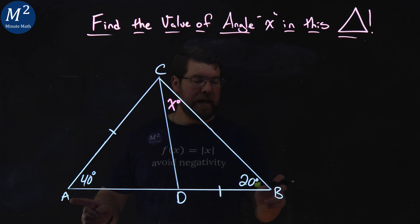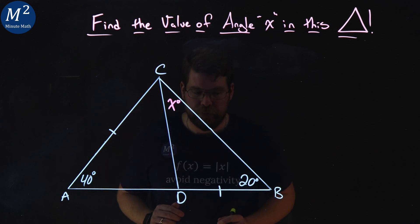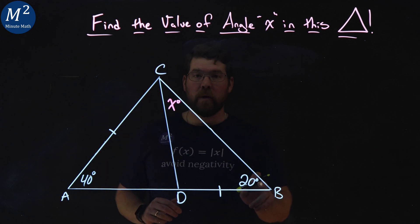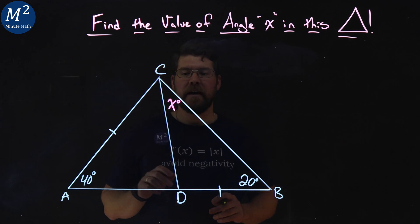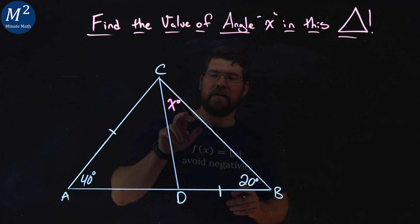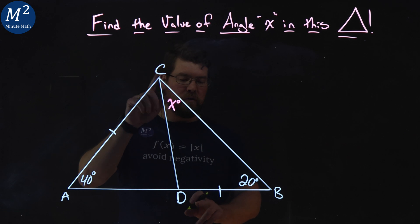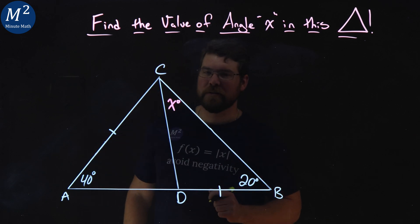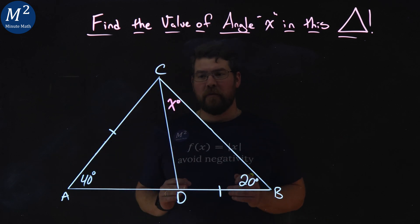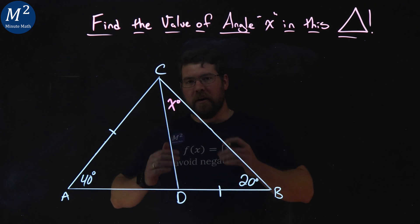We're given triangle ABC here, and we have an angle here of B is 20 degrees and A is 40 degrees, and DCB is the angle X which we need to find. We know that AC is congruent to DB. Again, not drawn to scale. With just this information, can we find the value of X?